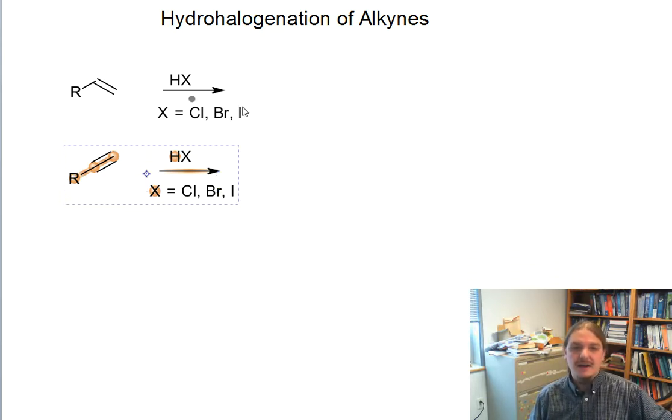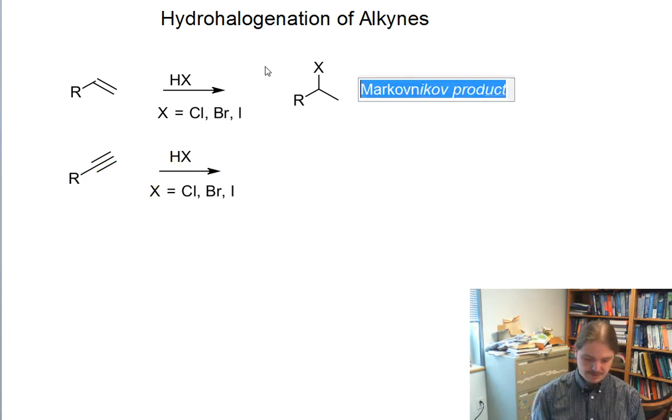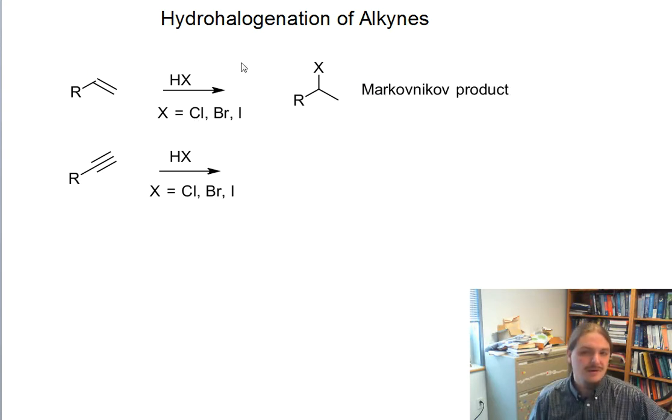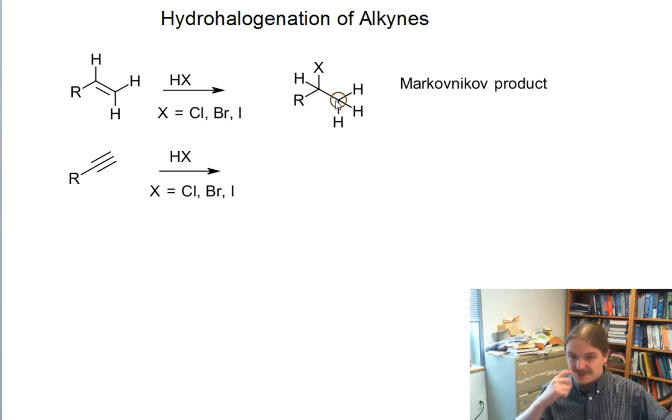Fluorine has to be weird. The alkenes react with the hydrohalic acids, undergo an addition reaction to put the halogen at the more substituted spot. This would be the Markovnikov product. And if we wanted to be explicit about what happened to that hydrogen, the hydrogen ended up on the other position.